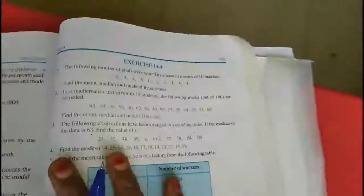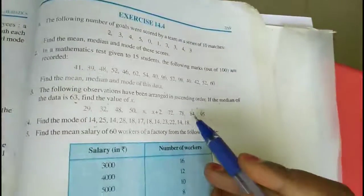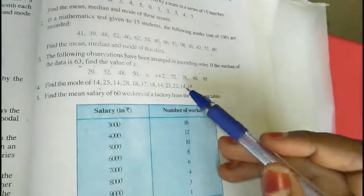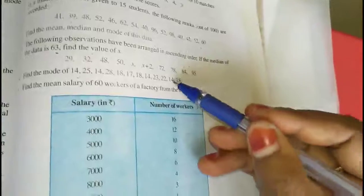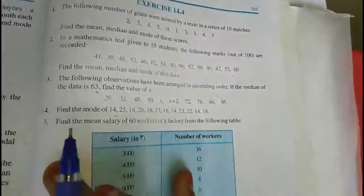Hi dears, in last class we completed up to 14.4, up to 3 sums we completed. Now we are going to talk about problems 4, 5, and 6. The deleted portion is for you, so we are going to talk about the 4th and 5th sums. See the 4th sum.